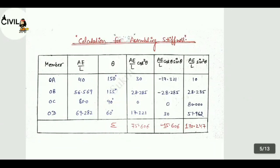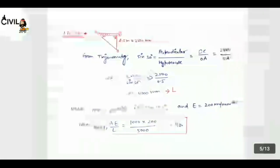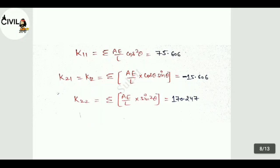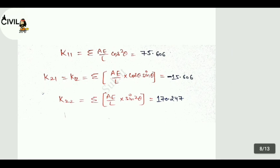Now, stiffness equation. K11 is equal to AE/L cos squared theta, value is equal to 75.606. And K21 is equal to K12, value is equal to AE/L cos theta sin theta is equal to minus 15.606. And K22 value is equal to AE/L sin squared theta, means 170.247.